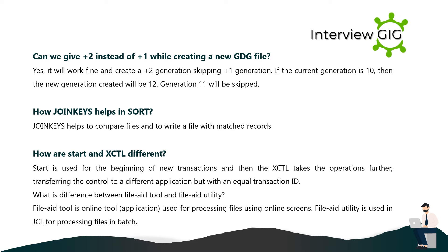Can we give +2 instead of +1 while creating a new GDG file? Yes, it will work fine and create a +2 generation, skipping the +1 generation. If the current generation is 10, then the new generation created will be 12 — generation 11 will be skipped.